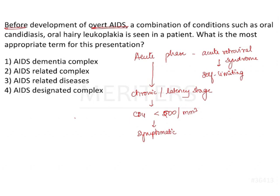Before developing overt AIDS, the patient develops a combination of conditions such as chronic fever, diarrhea, weight loss, herpes zoster, candidiasis, and hairy leukoplakia. This presentation of various conditions just before the patient develops overt AIDS is denoted by the term ARC — AIDS related complex.